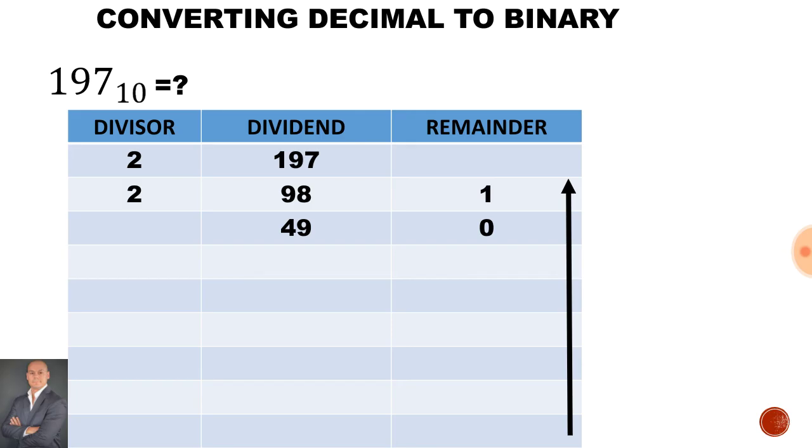Once again we have an odd number 49, so therefore there will be a remainder. So how many times will 2 go into 49? 24 times remainder 1. If I want to double check my answer I can work my way back one step. 24 times 2 is 48 plus 1 and that gives me 49.